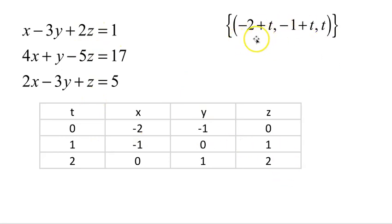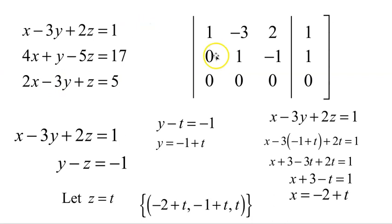I have also listed the general form for the solution: x is negative 2 plus t, y is negative 1 plus t, z is t. But what enabled us to recognize we had an infinite number of solutions? With our 3x3 system, it is the fact that we have a line all of zeros: 0, 0, 0, 0. If that happens, an entire row of zeros, that will be indicative of a situation where we're going to have an infinite number of solutions. And that will conclude this lesson.